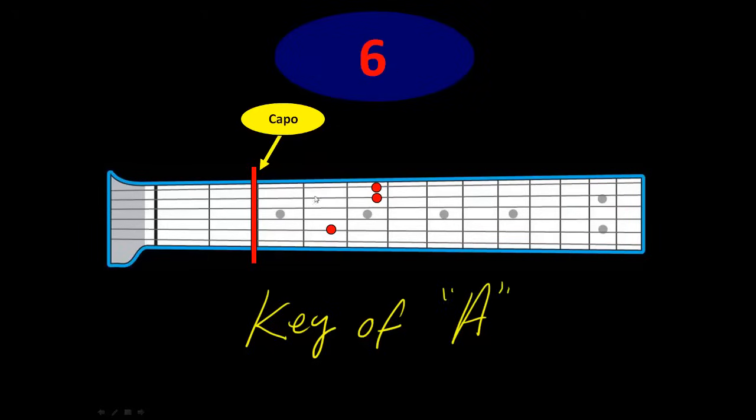And this one was an E minor seven, you remember? You might want to rewind the video to get these names. E minor seven, two steps, one, two, is now an F sharp, F sharp minor seven chord. So there you have it. That's how you understand how a capo works.